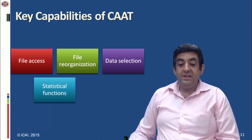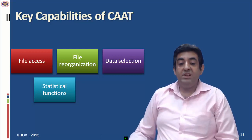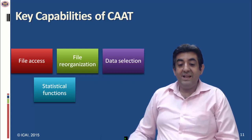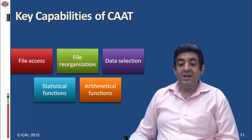Next is statistical function. With the help of CAAT, an auditor can perform statistical functions like stratification, sampling, and frequency analysis for intelligent analysis of the data. Last is arithmetic function, which means with the help of automatic function we can do recomputation and re-performance of results.